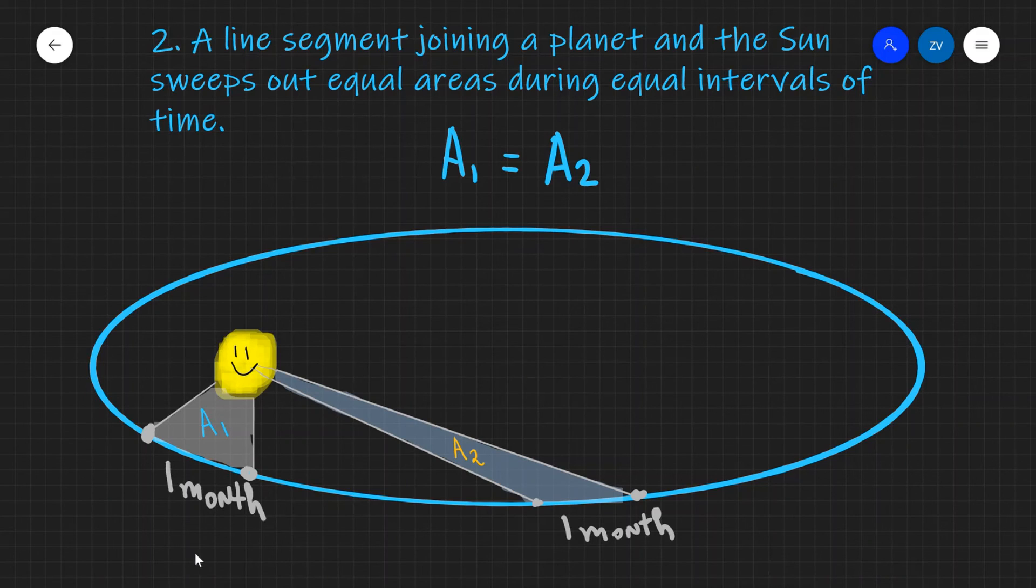Now the time interval doesn't have to be a month. I've just chosen this as an example. Okay, so hopefully this makes sense. A line segment joining a planet and the sun sweeps out equal areas during equal intervals of time.